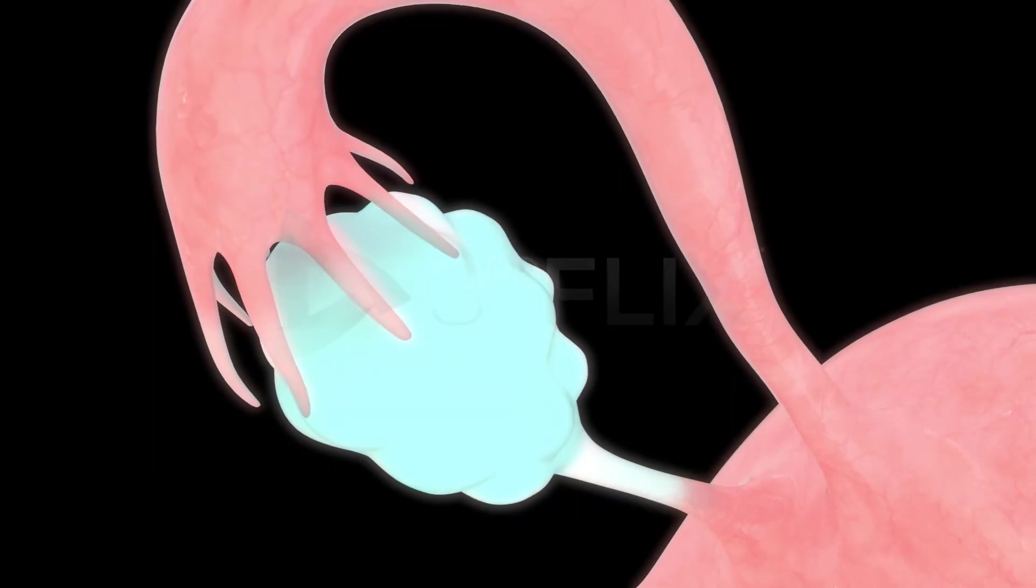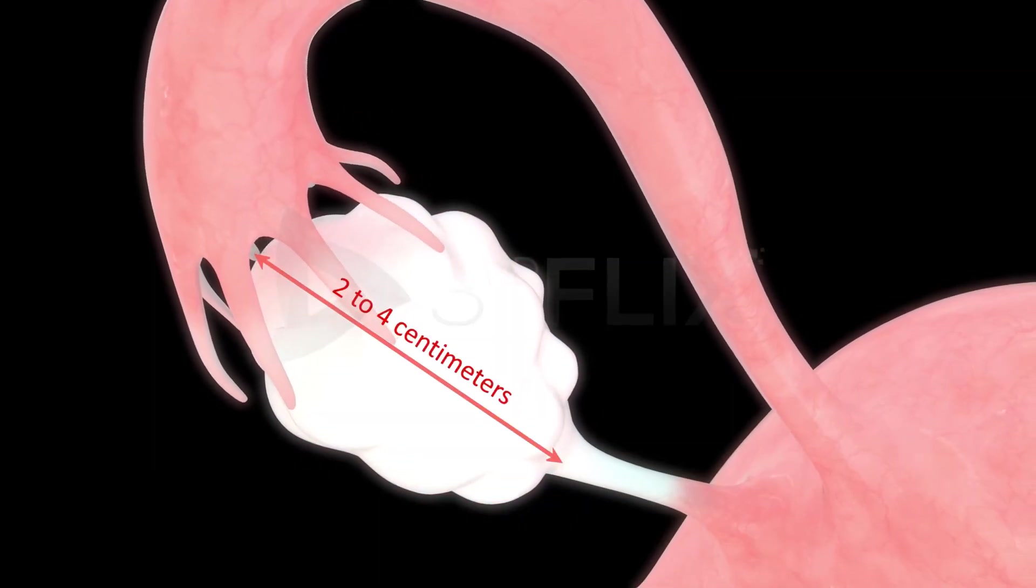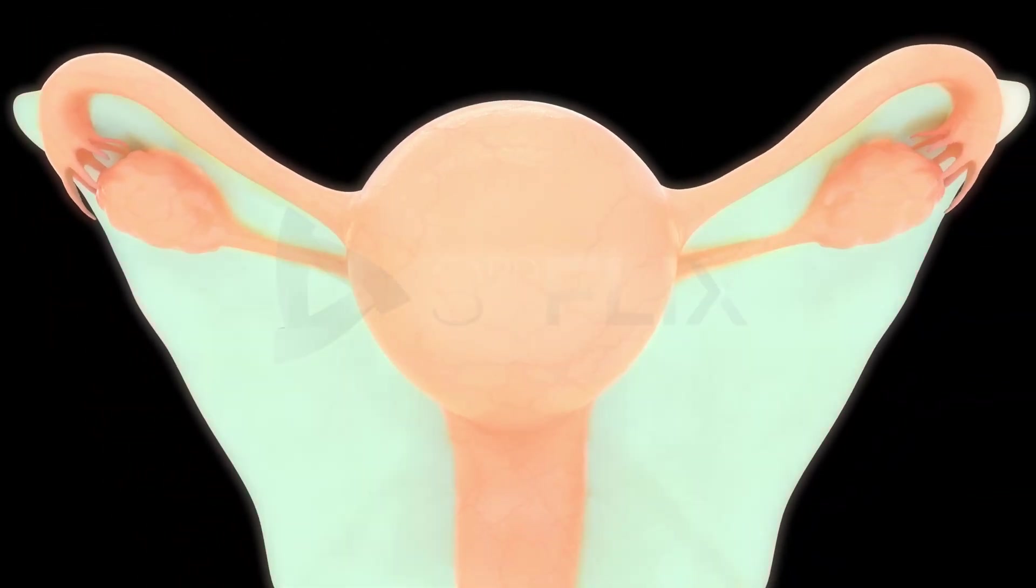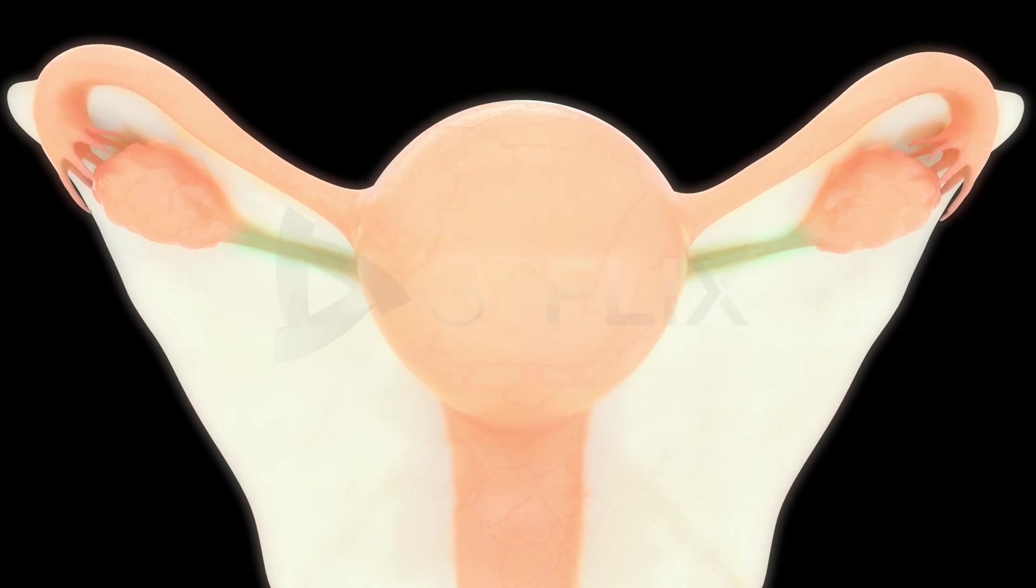Each ovary is an almond-shaped structure, 2 to 4 cm long. Each ovary is connected to the pelvic wall and uterus by ligaments.